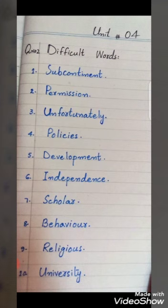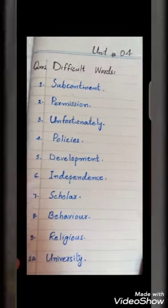Number 6: Independence. Number 7: Scholar. Number 8: Behavior. Number 9: Religious. Number 10: University. Okay students, Allah Hafiz.